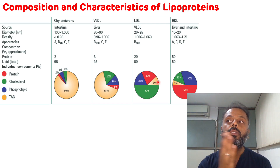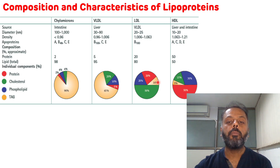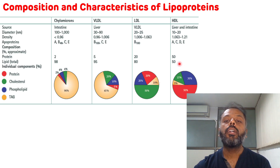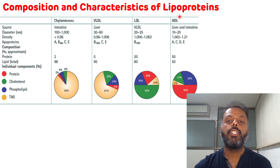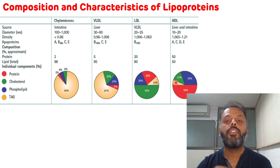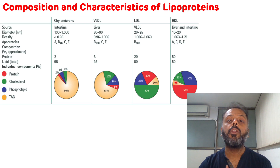HDL contains 50% lipid and 50% protein. Within the 50% lipid portion, 30% is phospholipid — so HDL contains the highest amount of phospholipid. Cholesterol is 15% and triacylglycerol is 5%, meaning HDL contains a lower amount of triacylglycerol.